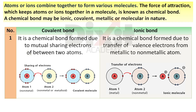Point number 1. Covalent bond is a chemical bond formed due to mutual sharing of electrons between two atoms. Ionic bond is a chemical bond formed due to transfer of valence electrons from a metallic to a non-metallic atom.